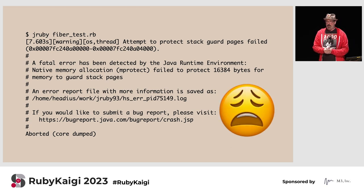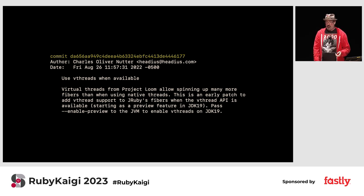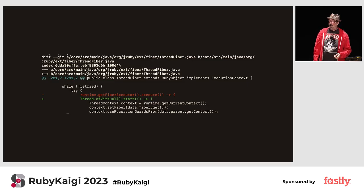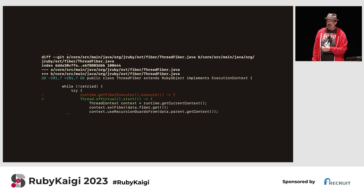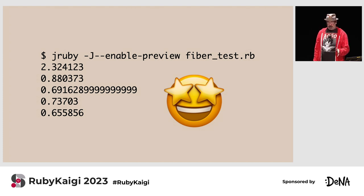On JRuby without Project Loom, trying to run 100,000 threads either gives you an error or crashes JRuby completely — the JVM is just not built for it. But I've integrated Loom support into current JRuby builds. It was a surprisingly trivial change: I replaced our old call to a native thread pool with what Loom calls virtual threads. With just that change, we can actually have 100,000 fibers starting up, resuming, and executing to completion very rapidly.